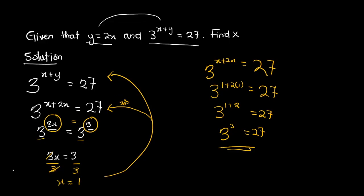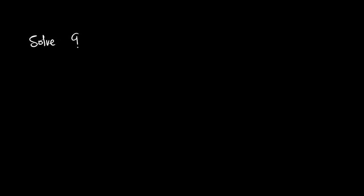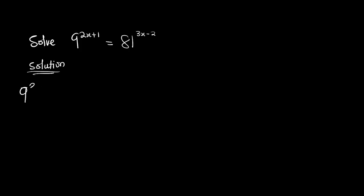Now let's look at more examples — I will be a little bit faster. We have to solve: 9 raised to the power 2x plus 1 is equal to 81 raised to the power 3x minus 2. The key in solving these questions is to find a common base. So we have 9 raised to the power 2x plus 1 is equal to 81 raised to the power 3x minus 2.